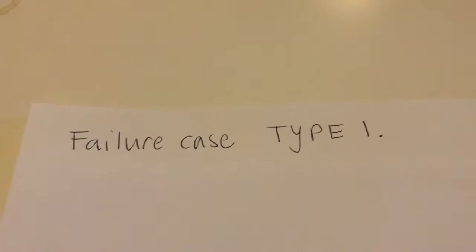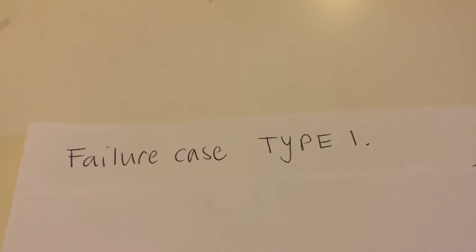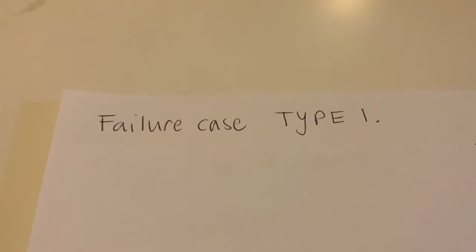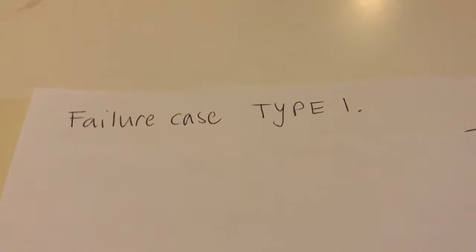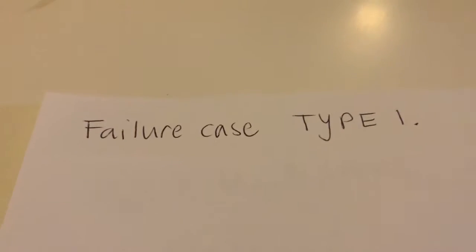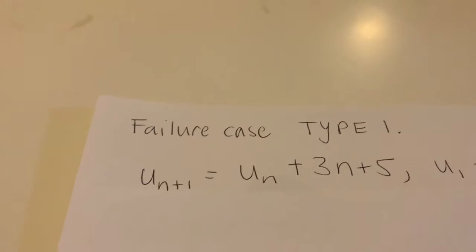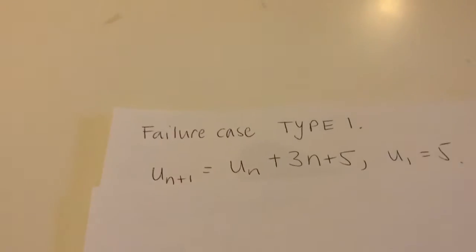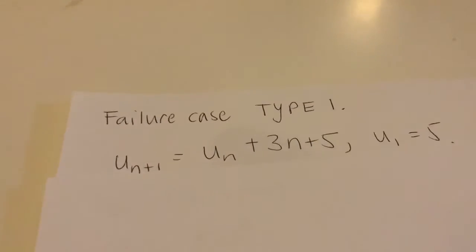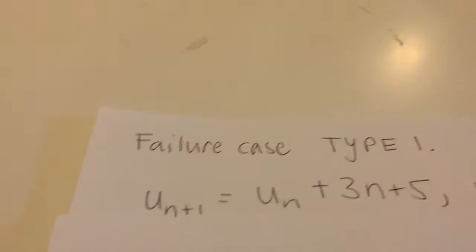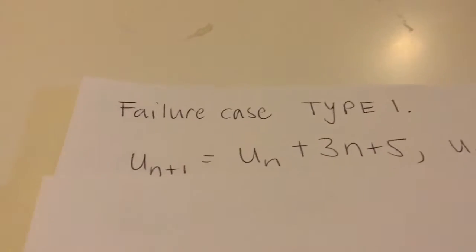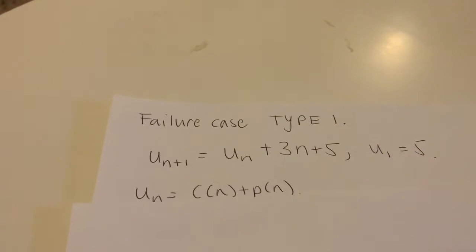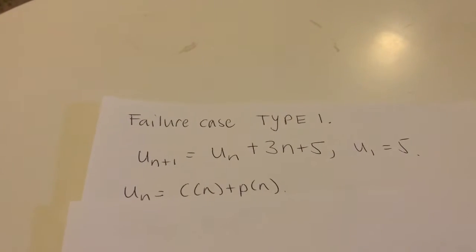We're looking at when you're solving a first-order recurrence relation and it doesn't work. There are two types. The first type is when the coefficient of your u_n in the recurrence relation is 1. This isn't going to work — I'm going to attempt to solve it, but it's not going to work.